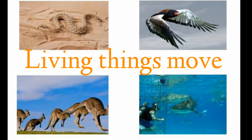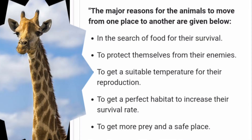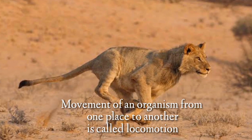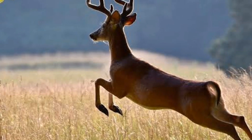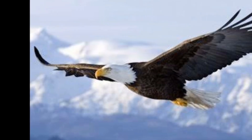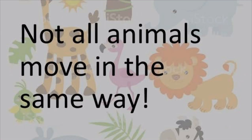The fifth characteristic of leaving things is that they move. Most animals move from place to place in search of food and shelter, to protect themselves from enemies, or to find a favorable climate — this is called locomotion. Animals locomote in different ways: running, swimming, jumping, flying, hopping, or gliding.